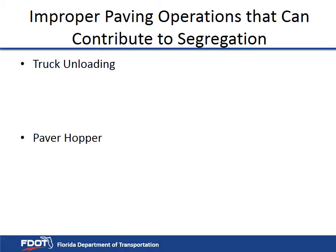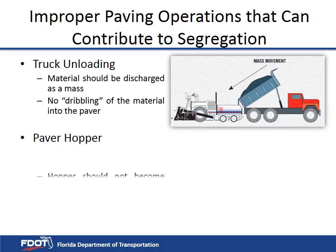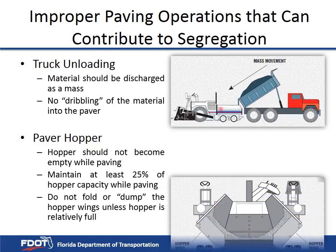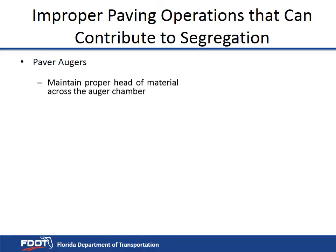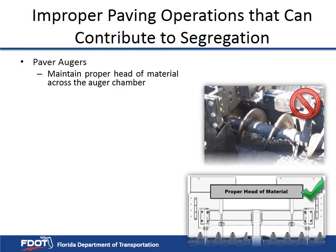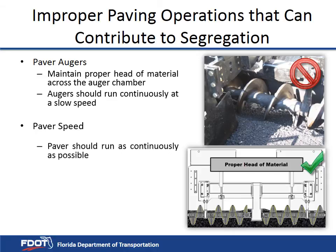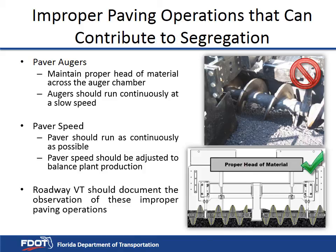Here are some improper paving operations that can contribute to asphalt segregation. During truck unloading, the material should be discharged as a mass. At the paver, the hopper should not become empty while paving — the contractor should maintain at least 25% of the hopper capacity. The hopper wings should not be folded or dumped unless the hopper is relatively full. At the paver's augers, a proper head of material should always be maintained across the auger chamber, with augers running continuously at a slow speed. The paver speed should be adjusted to balance plant production and minimize paver stops. The roadway VT should document and observe these improper paving operations and inform the project administrator.